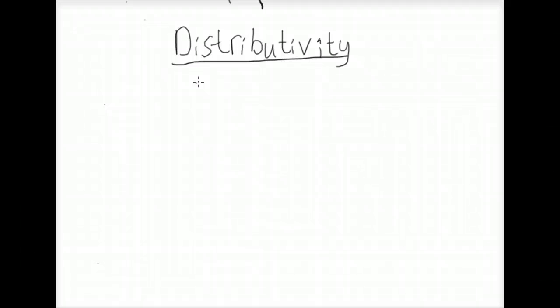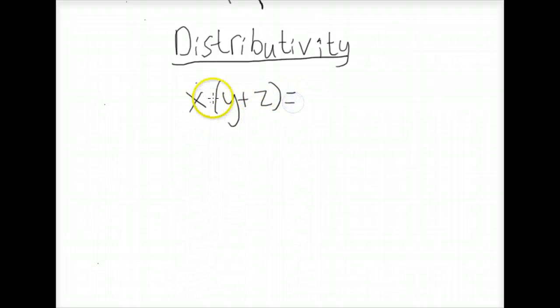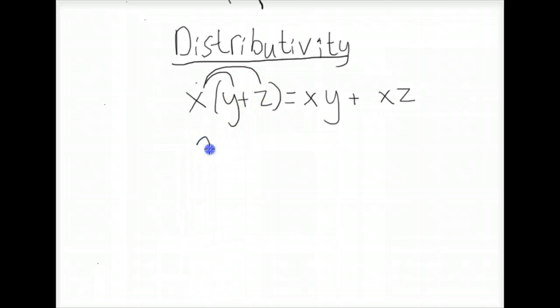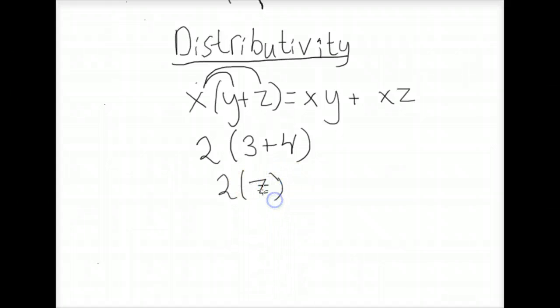The next property is the distributivity property, which you may remember from Algebra 1. Multiplication distributes over addition: x times (y plus z) equals xy plus xz. The distributivity property also means parentheses are dealt with first. For example, 2 times (3 plus 4) — doing parentheses first gives 2 times 7, which equals 14.